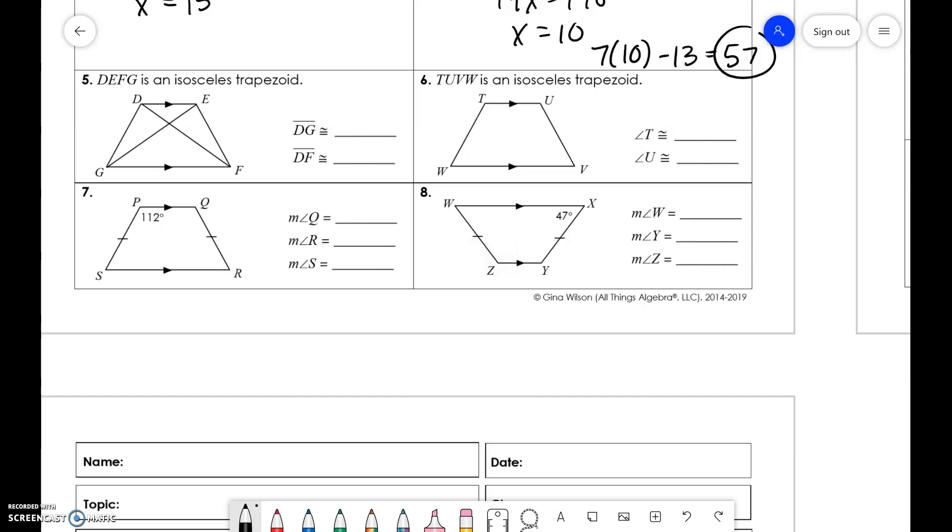These are isosceles trapezoids, so now we have to use the other properties. We have DG congruent to EF, and DF is congruent to GE. Those lines here are congruent, and the diagonals are also congruent. So, over here, angle T is congruent to angle V. My answer key was right, base angles.